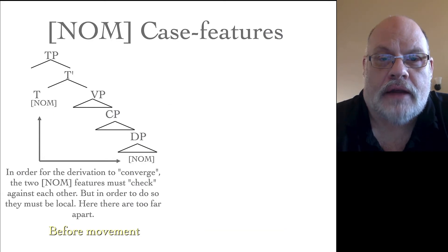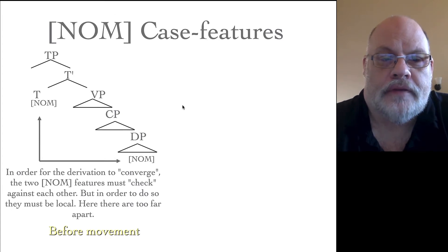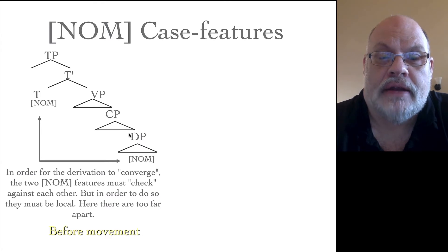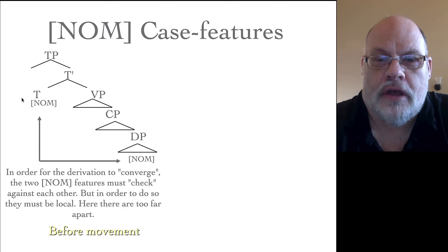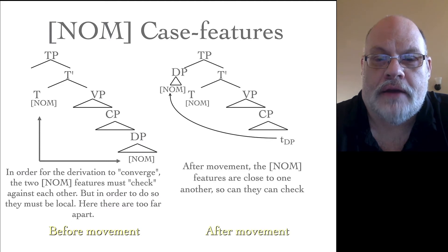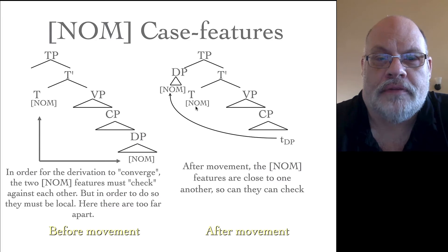Now let's look at the same thing that happens with case features. Say we have a DP downstairs that has nominative case on it, and it is not in the case position downstairs. Fortunately, we have a position higher up in the tree which has a nominative feature and an empty specifier. In order for the derivation to converge — for all the features to be correctly checked — we have to move that DP up into the specifier of TP, so that these two features are close to one another. After movement, we've got the items close together.